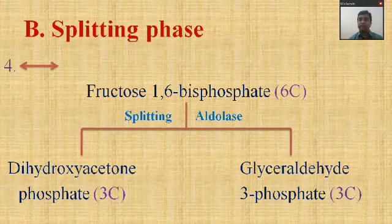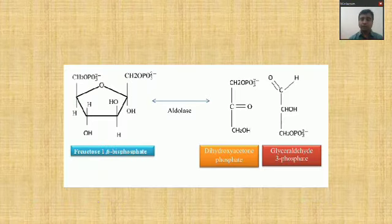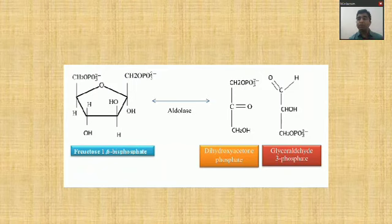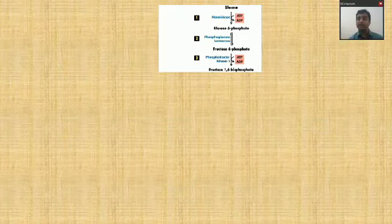The enzyme is called aldolase — named based on the gene aldol. Aldolase catalyzes the conversion of fructose-1,6-bisphosphate into two three-carbon molecules: dihydroxyacetone phosphate (DHAP) and glyceraldehyde-3-phosphate (G3P).